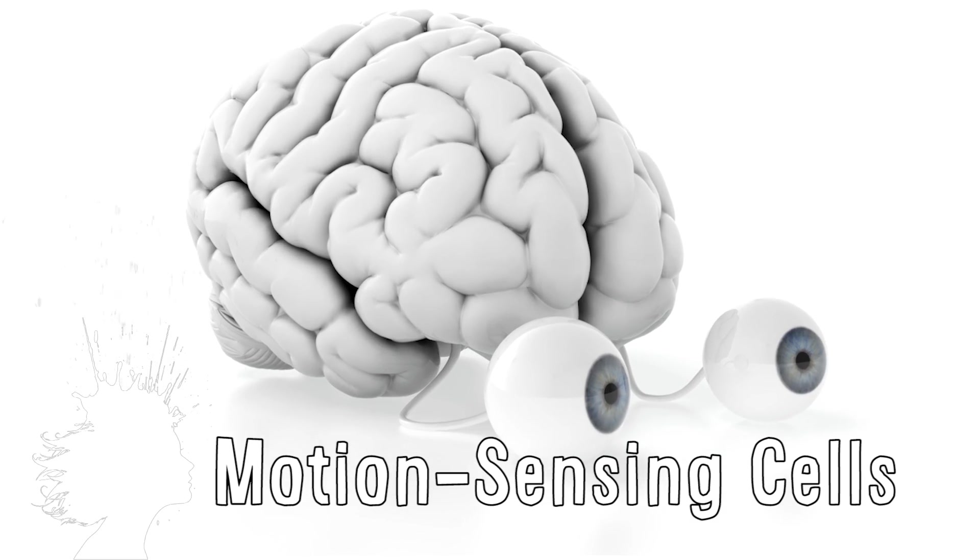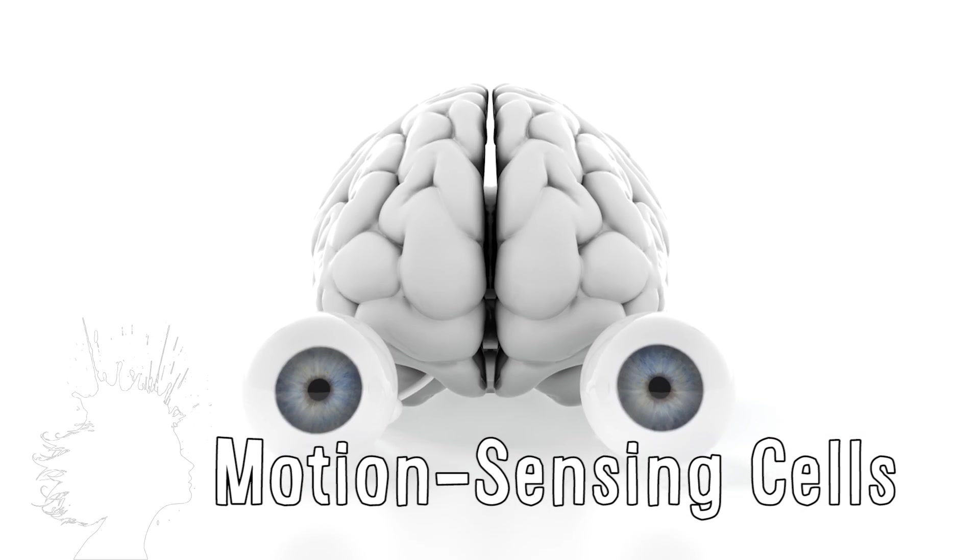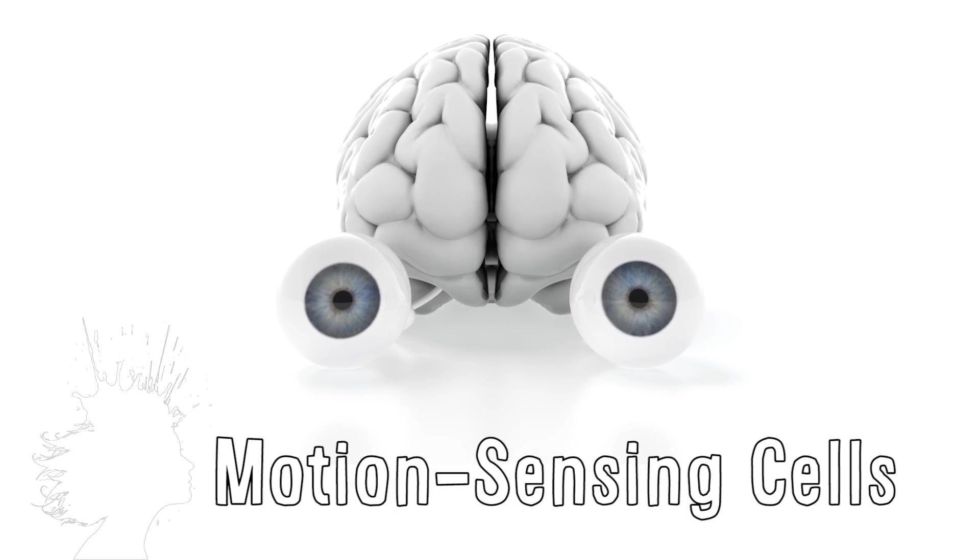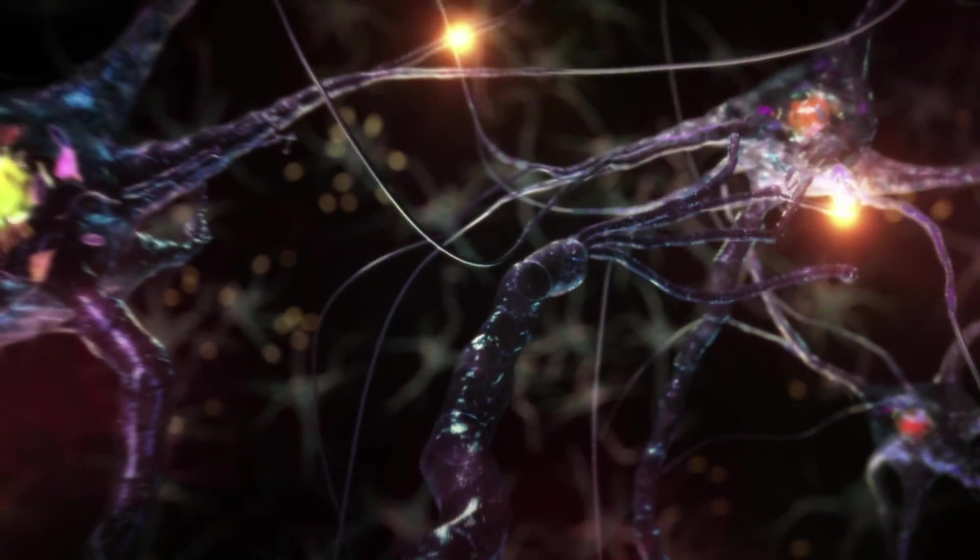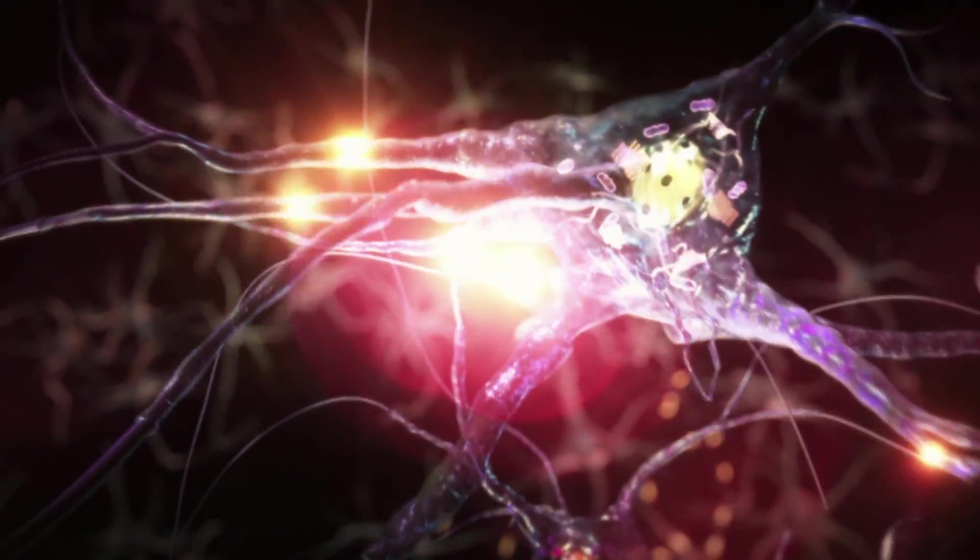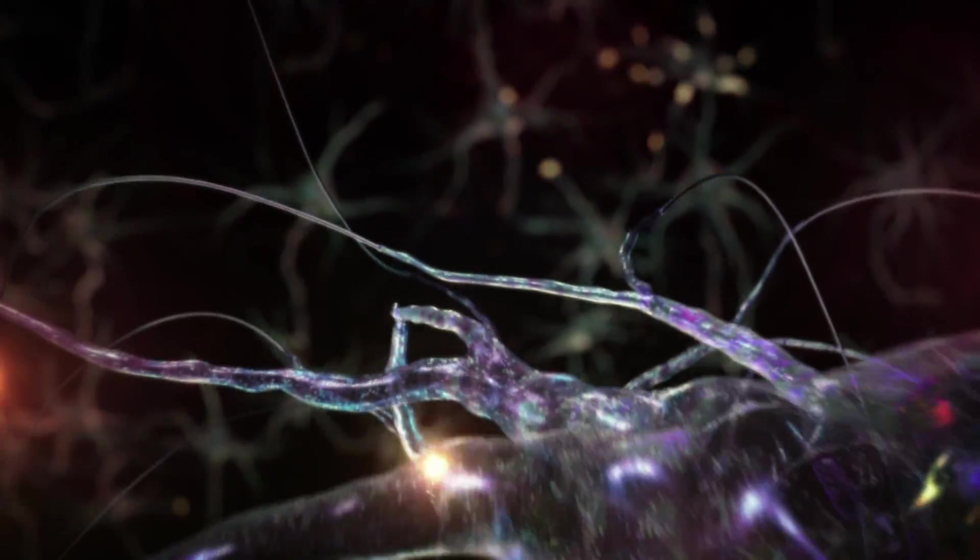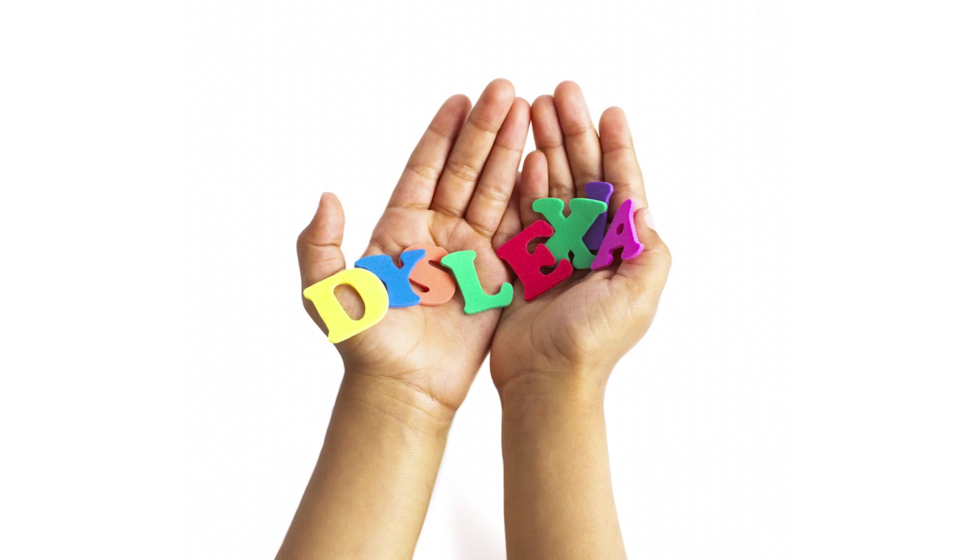Scientists have studied the direct link between our brain and the motion sensing cells in our eyes. Although we've known for a half century of these cells that help us know when something is moving, they've now studied the direction sensing cells linked to the cortex which can help us understand things like dyslexia.